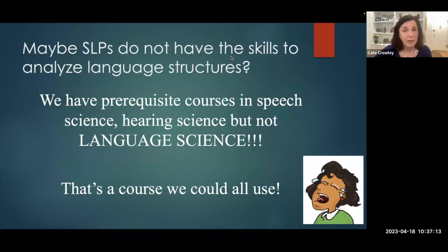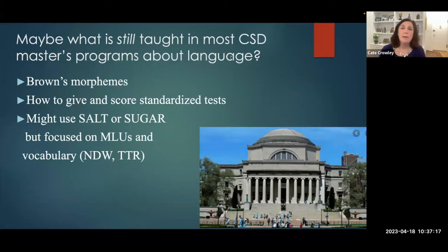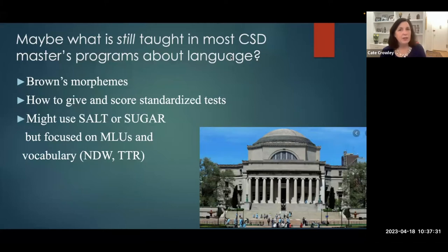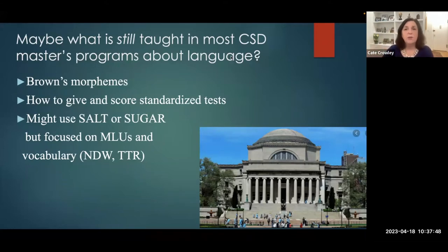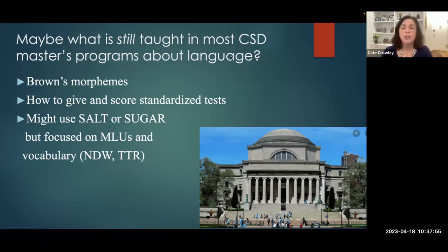Language science is a course we could all use. What's still taught in most CSD master's programs about language is: if the child doesn't have Brown's morphemes at a certain age, they have a language disorder. Again, it's one variety of English. Students are taught how to give and score standardized tests without looking at whether those tests are valid, reliable, and free of bias. If the clinician doesn't know how to code deeper language structures, they generally just use number of different words, type-token ratio — highly linked to socioeconomic background — and MLU, which is highly linked to the morphology of standard American English.